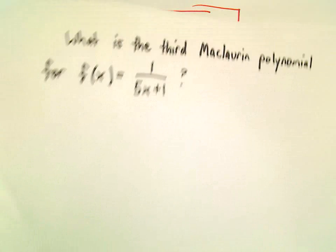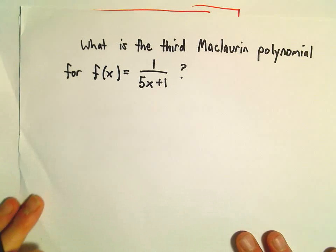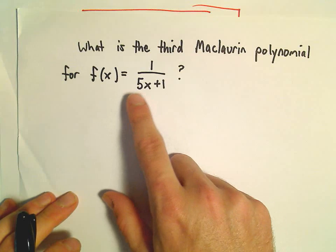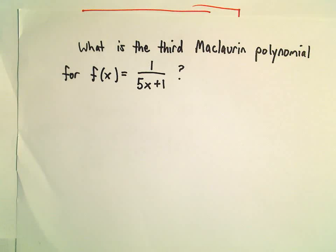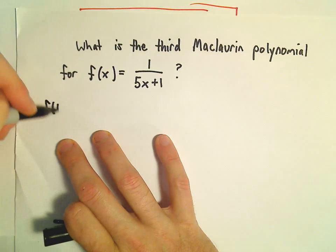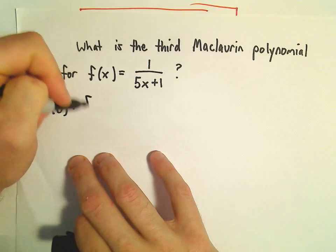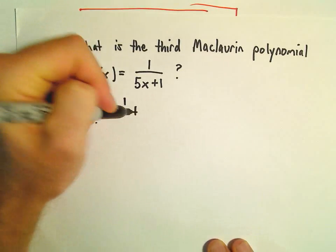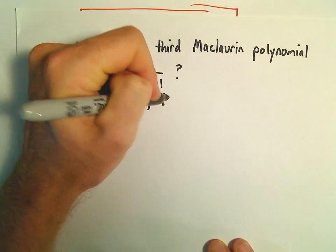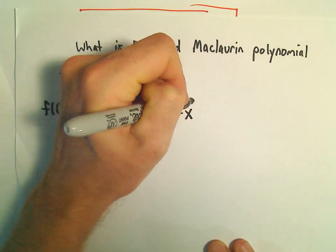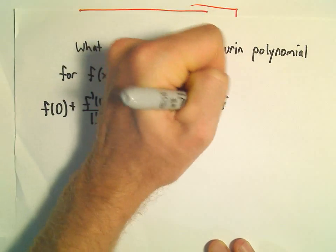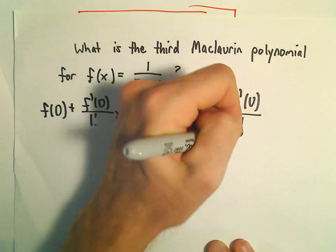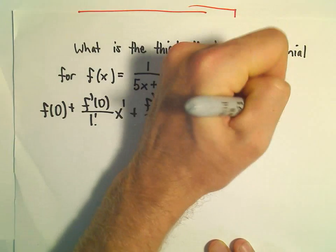In this example we're going to find another Maclaurin polynomial. We're going to find the third degree Maclaurin polynomial for f(x) = 1/(5x+1). So we'll have to come up with a value for f(0) + f'(0)/1! times x + f''(0)/2! times x squared + f'''(0)/3! times x cubed.